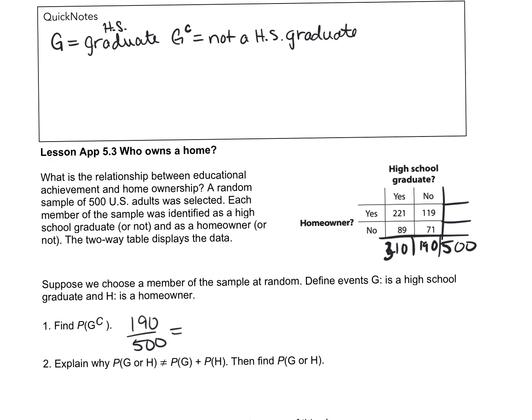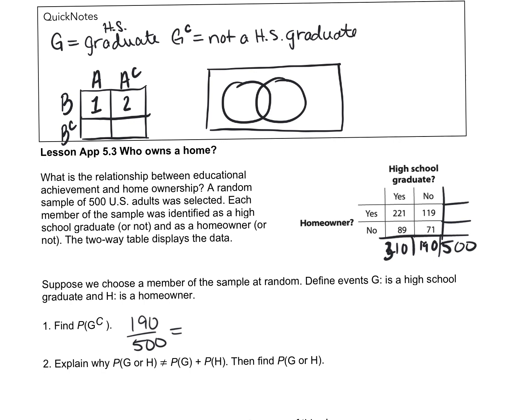So in our two-way table, you have the event A and you have A complement. You have event B and you have event B complement. Then how does that go into a Venn diagram? If we label this area 1, this area 2, this area 3, and this area 4.